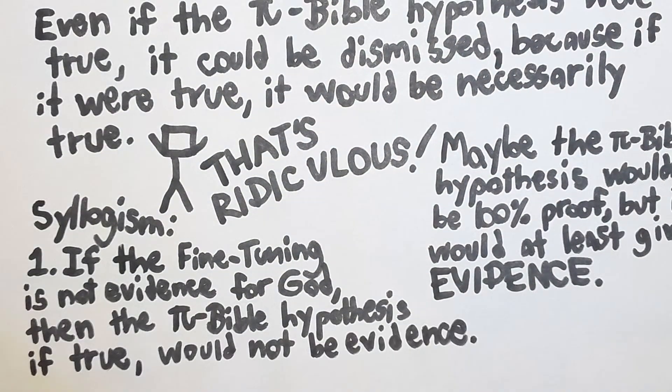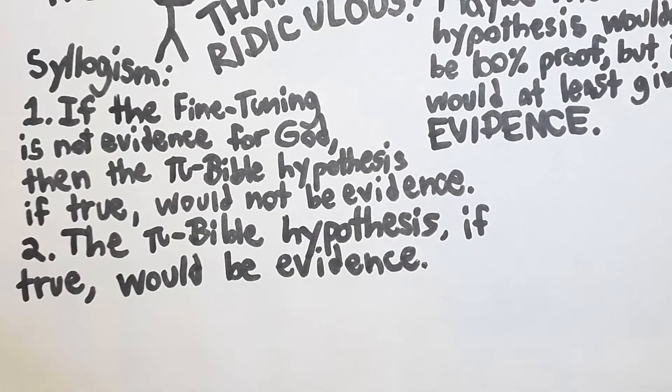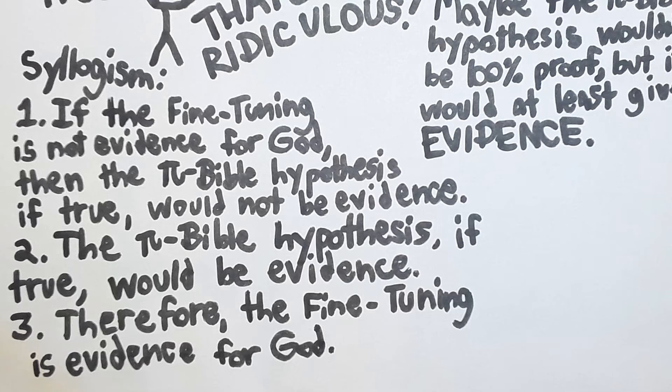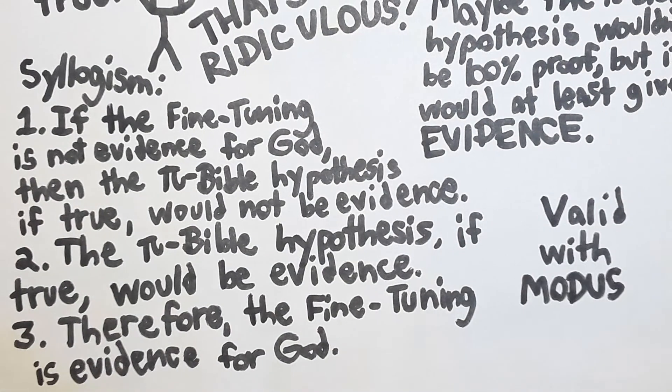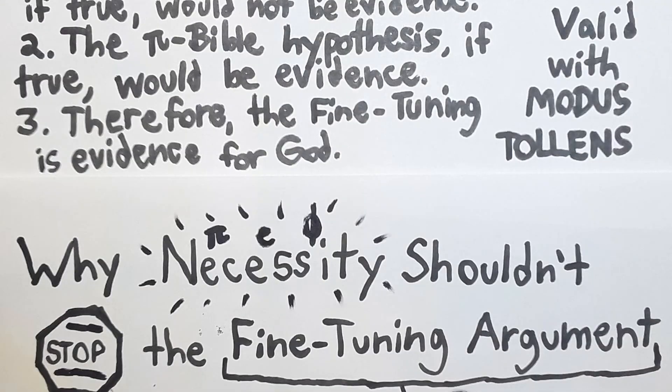We can formulate this train of logic as a syllogism. Premise 1: If the fine-tuning is not evidence for God, then the Pi Bible hypothesis, if true, would not be evidence. Premise 2: The Pi Bible hypothesis, if true, would be evidence. Therefore, the fine-tuning is evidence for God. This is a logically valid argument via modus tollens. This is why I think that necessity shouldn't stop the fine-tuning argument. An atheist shouldn't appeal to necessity to answer the fine-tuning argument. This doesn't block off the atheist from appealing to the multiverse, but that's another video.